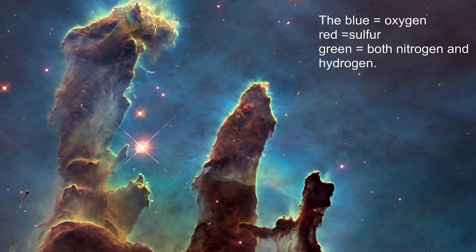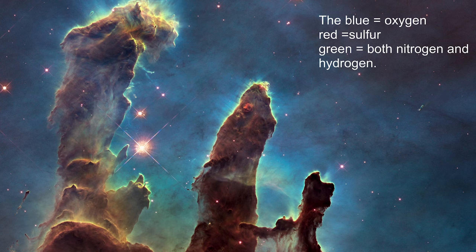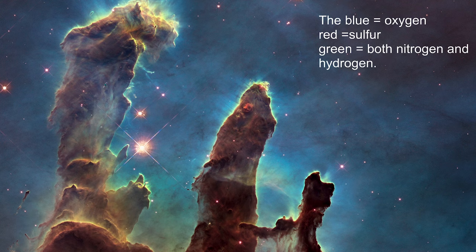So a classic example here is what we refer to as the Helix Nebula, and it's one of my favorite Hubble images. And these are massive plumes of gas, but the colors here can be analyzed, even though it is millions of light years away. The blue represents oxygen, the reds within this represents the presence of sulfur, and green represents both nitrogen and hydrogen. So from a long distance, we can actually determine the chemical composition of astronomical structures.